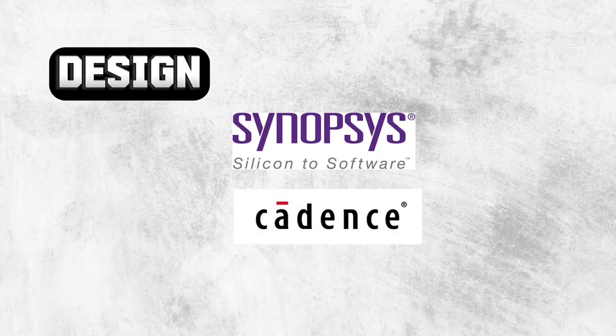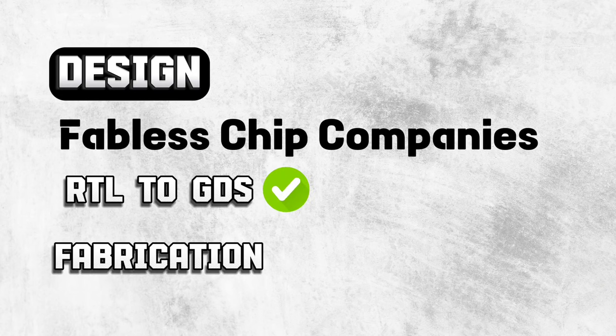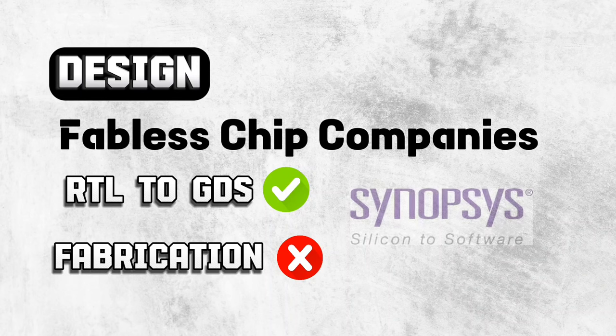Then we have Fabless chip companies. They have the full VLSI design flow — RTL to GDS — but do not have their own manufacturing unit or fabrication lab. These companies basically do a lot of design using EDA tools and IPs, so Synopsys and similar EDA companies serve Fabless design companies as customers.